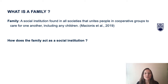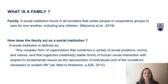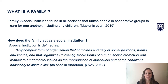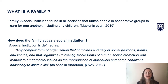You might ask, but how does the family act as a social institution? A social institution is defined as any complex form of social organization that combines a variety of social positions, norms, and values that organize as relatively stable forms of human social interaction with respect to fundamental issues, such as the reproduction of individuals and the conditions necessary to sustain life — basically, a habitual way that humans meet their needs in groups.